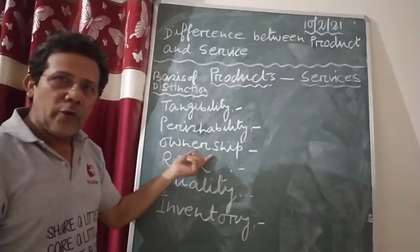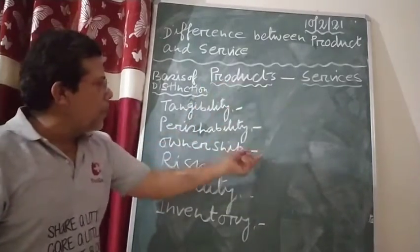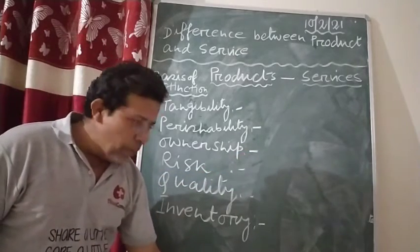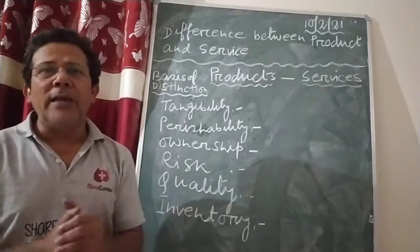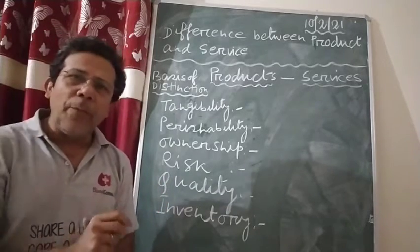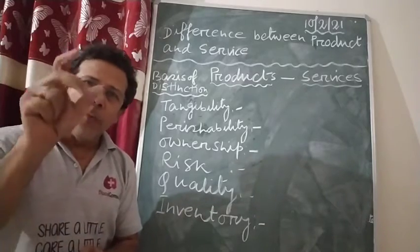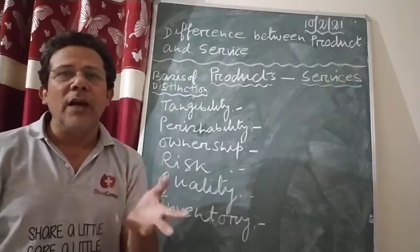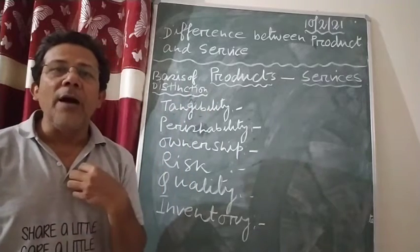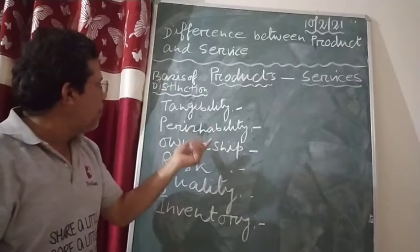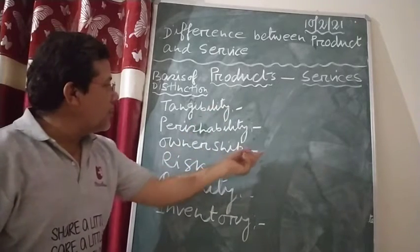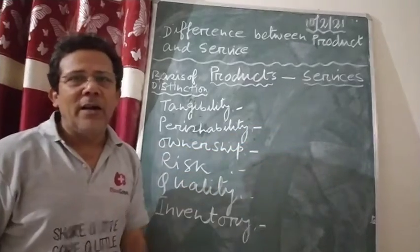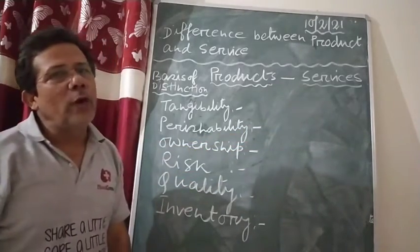Third point is ownership. The ownership of the product can be changed. For example, if you go to a shop and buy a samosa, you become the owner. So in the case of a product, ownership is transferable. But in the case of service, once it is delivered, it cannot be transferred to anyone else.